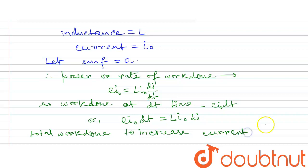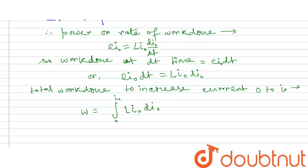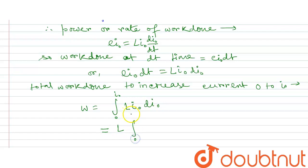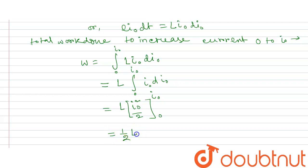The initial current is 0 and the final current is I0. So we have to integrate the work done: W equals integral from 0 to I0 of L·I dI, which gives W equal to L·I0² / 2, with limit 0 to I0. So W is equal to ½·L·I0².